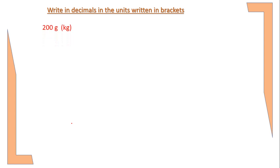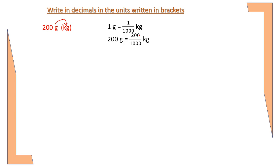Let's take one more problem: 200 gram expressed in kg. In this question there is a single unit, which is gram. I will convert gram to kg. Since 1 gram equals 1/1000 kg, 200 grams equals 200/1000 kg.